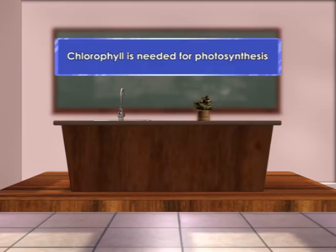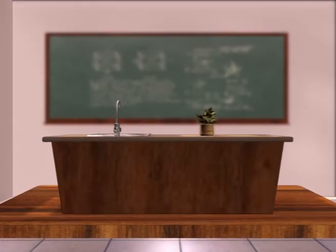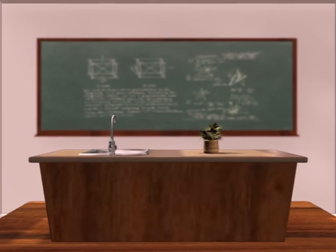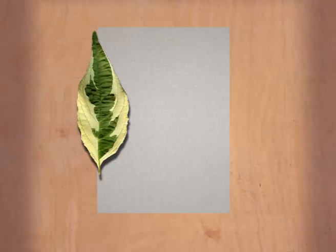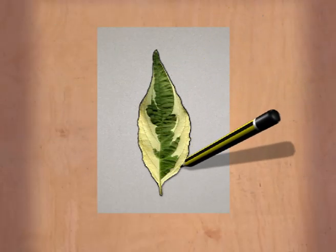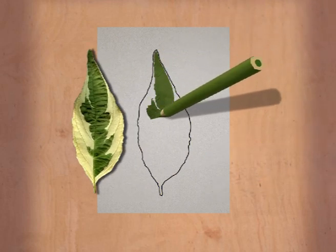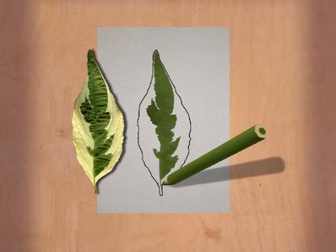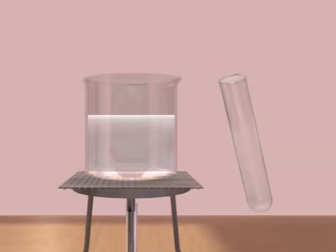Chlorophyll is needed for photosynthesis. This experiment shows that chlorophyll is needed for photosynthesis. Pluck a variegated leaf that is exposed to sunlight, and trace the outline of the leaf to show the green and non-green areas. Then the leaf is tested for the presence of starch.